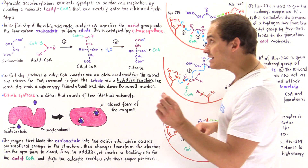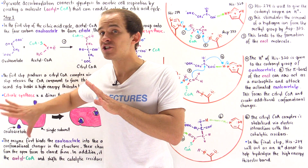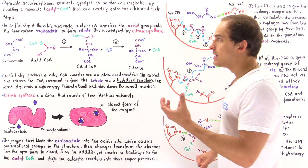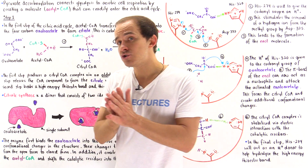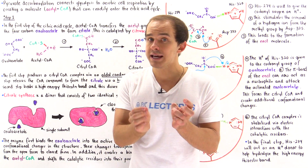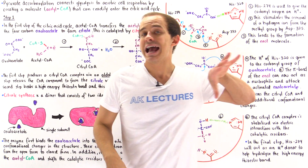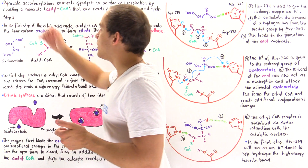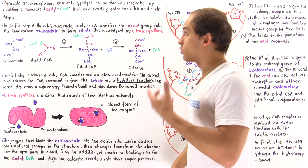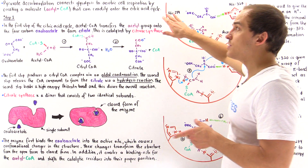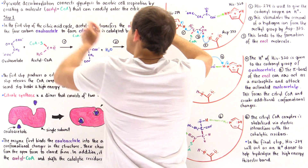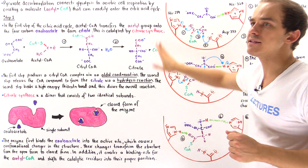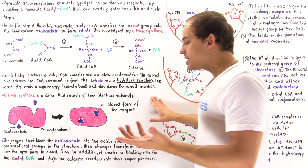This activates the molecule and allows it to enter the citric acid cycle. Pyruvate decarboxylation is the connection — the link between glycolysis and the citric acid cycle of aerobic cell respiration. It connects glycolysis to aerobic cell respiration by creating the acetyl coenzyme A molecule that can readily enter the first step of the citric acid cycle.